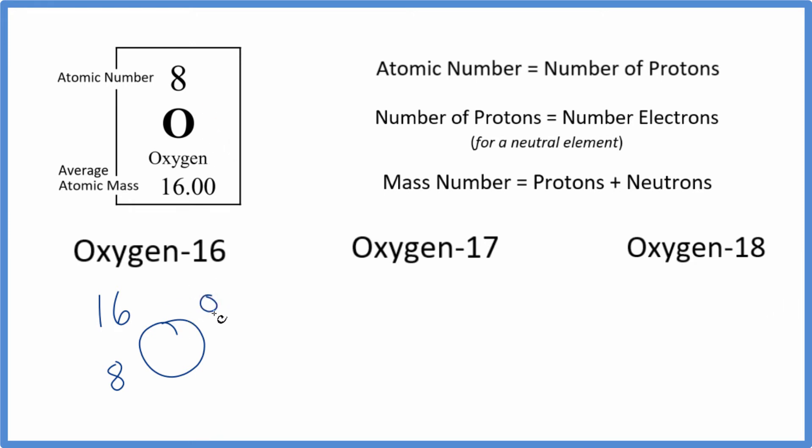So for oxygen-17 we have O, and 17 - that's the mass number. Down here we put the atomic number, which for oxygen is always going to be 8, that's the definition of oxygen. Pause and give oxygen-18 a try.